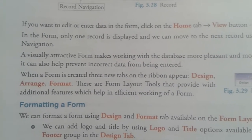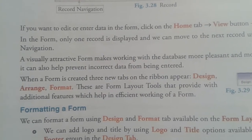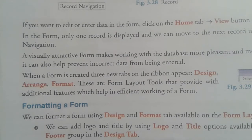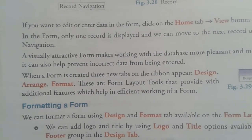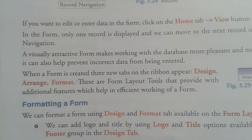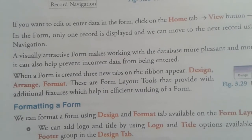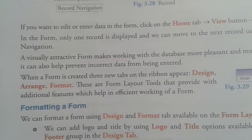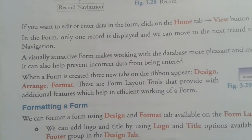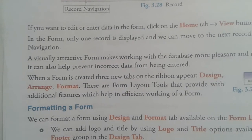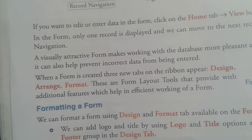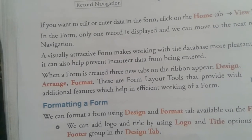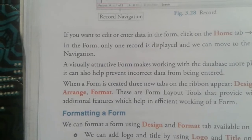These tabs help us to apply different filters to view specific data, arrange data in a specific manner, and apply various fonts and sizes to maintain the data in a table format. Formatting the report: we can format a report using the Design and Format tab available on the report layout tool. We can add a logo or title using options in the header and footer group in the Design tab. For font formatting of labels, adding a background image, we use options in the Format tab.